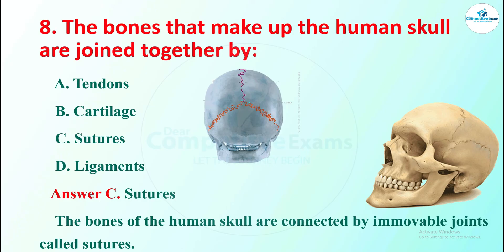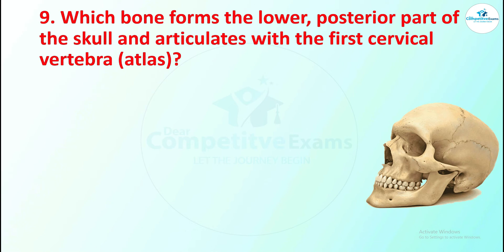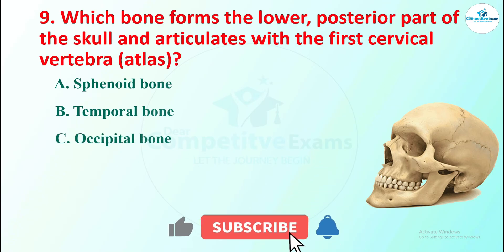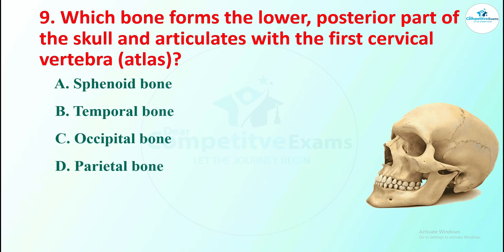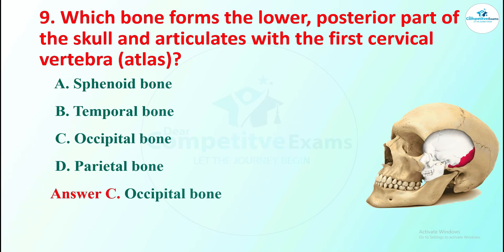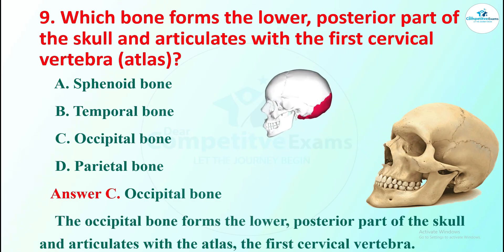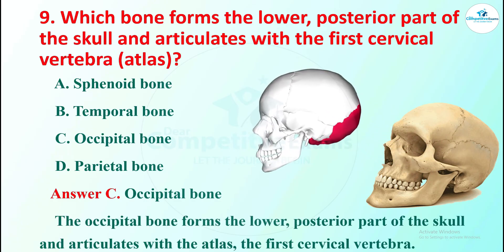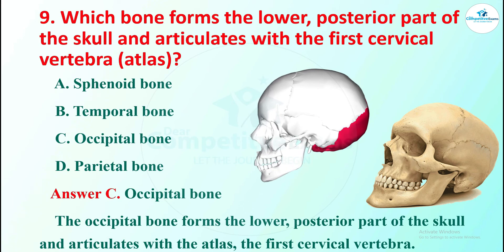Question 9: which bone forms the lower posterior part of the skull and articulates with the first cervical vertebra, the atlas? Options are sphenoid bone, temporal bone, occipital bone, and parietal bone. The correct answer is occipital bone. The occipital bone forms the lower posterior part of the skull and articulates with the atlas, the first cervical vertebra.